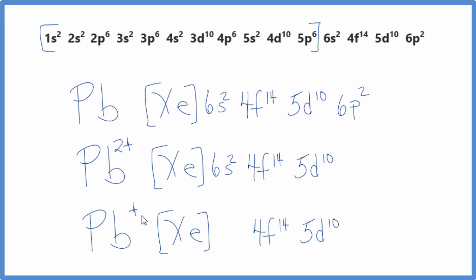And now instead of 2+, it becomes 4+. Let's move these over here. And this is the electron configuration for Pb4+.